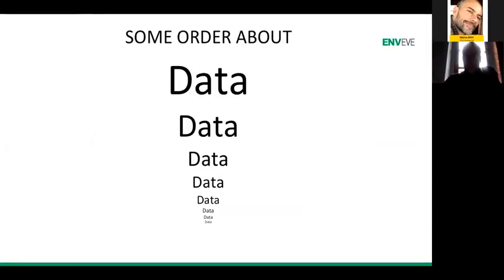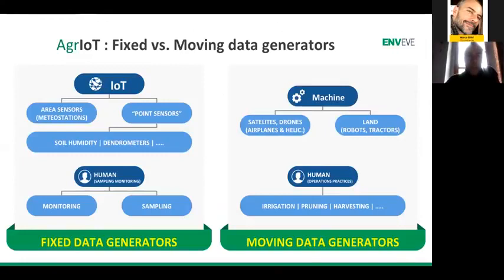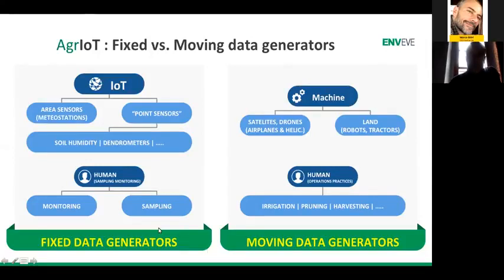Now let's focus on the data. IoT is creating data and we have many kinds of data. Let's put some order and differentiate among different types. We can look at data from the point of view of fixed data generators versus moving data generators. By data generators, we consider anything that can say something in digital agriculture — data that goes to the cloud and can support decision-making.